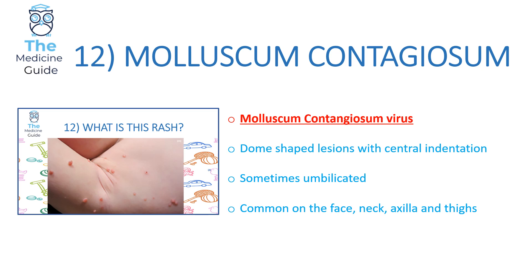Rash 12 is molluscum contagiosum, caused by the molluscum contagiosum virus. It typically presents as pearl-like papules or dome-shaped lesions with central indentation — a classic description to remember for SBAs. Sometimes these dome-shaped lesions are umbilicated, and they are typically found on the face, neck, axilla and thighs.